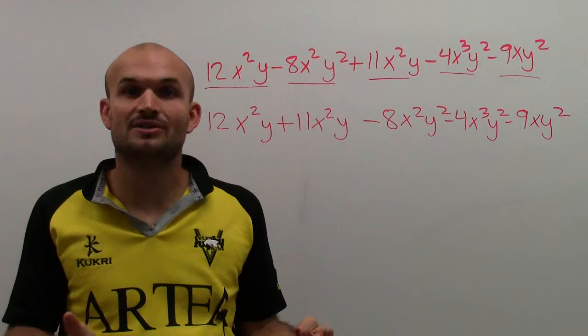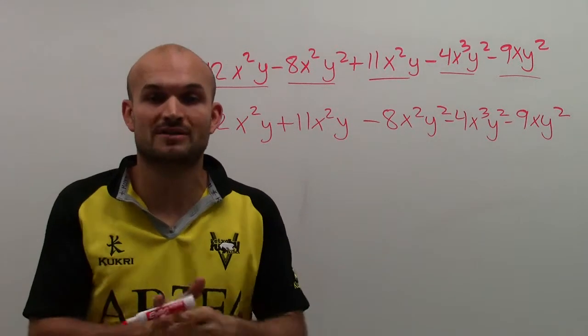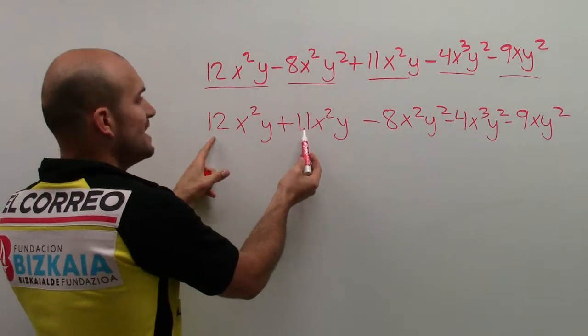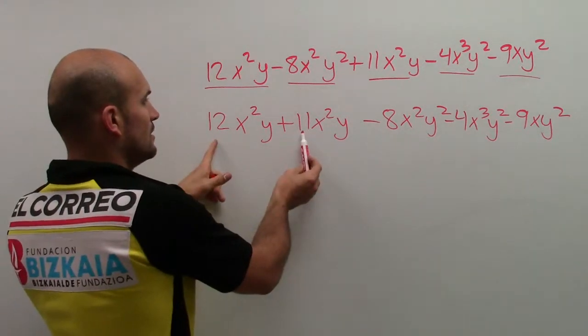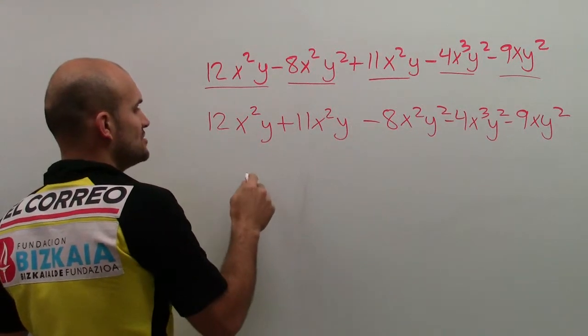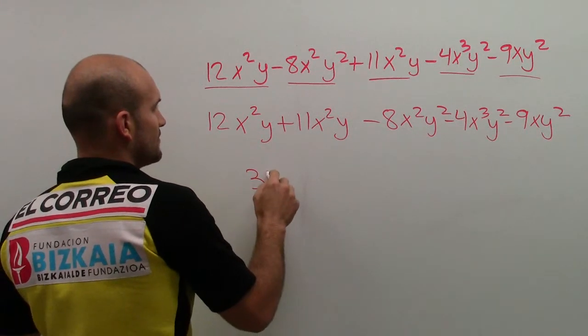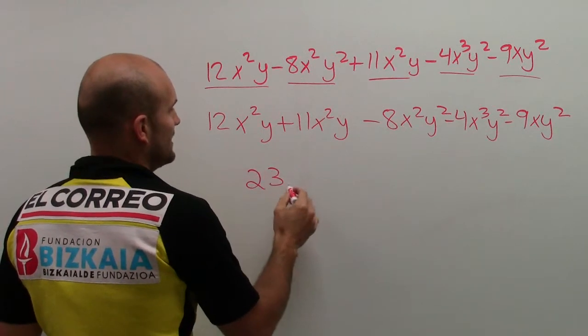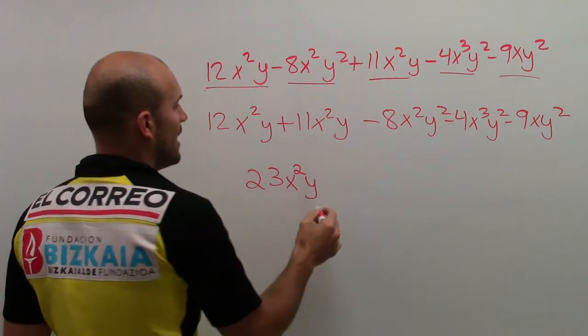Remember, x squared y are factors, our algebraic factors. So we're not going to do anything with them. What we're going to do is simply just take our coefficients and add them up. So 12 plus 11 is going to be 23x squared y.